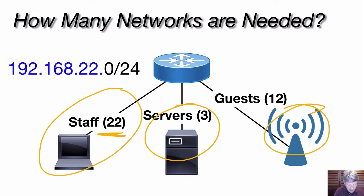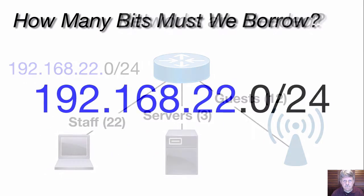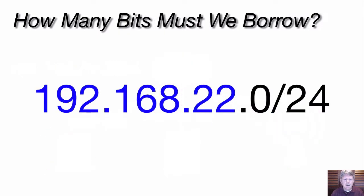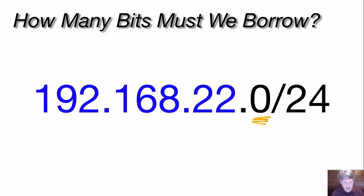Our assigned network is this one — that's what we're going to have to start working with. Our next step: how many of the host bits are we going to have to borrow for our subnets? With a class C address, we've got these eight bits for hosts. We need to figure out how many of those we're going to take and turn them into network bits in order to satisfy our requirement for three subnets.